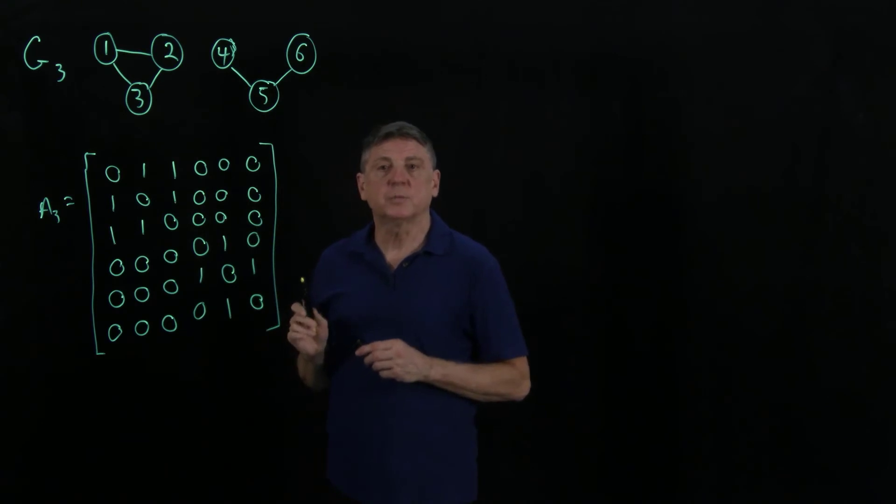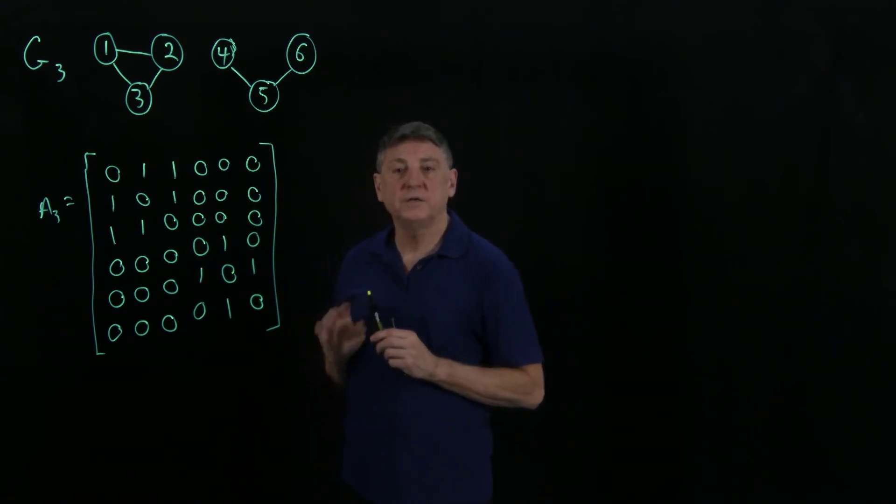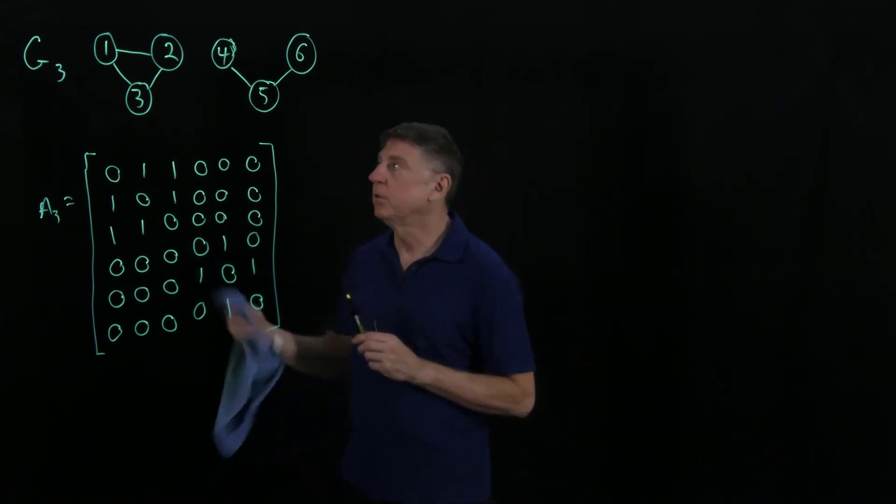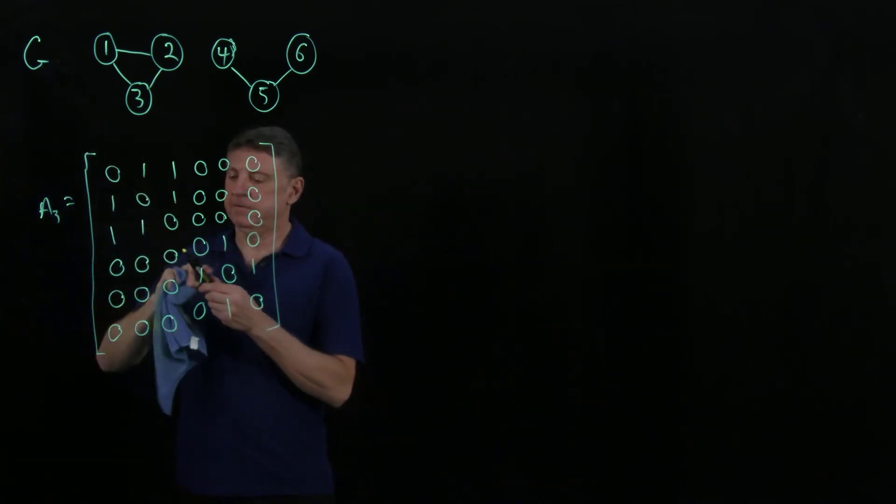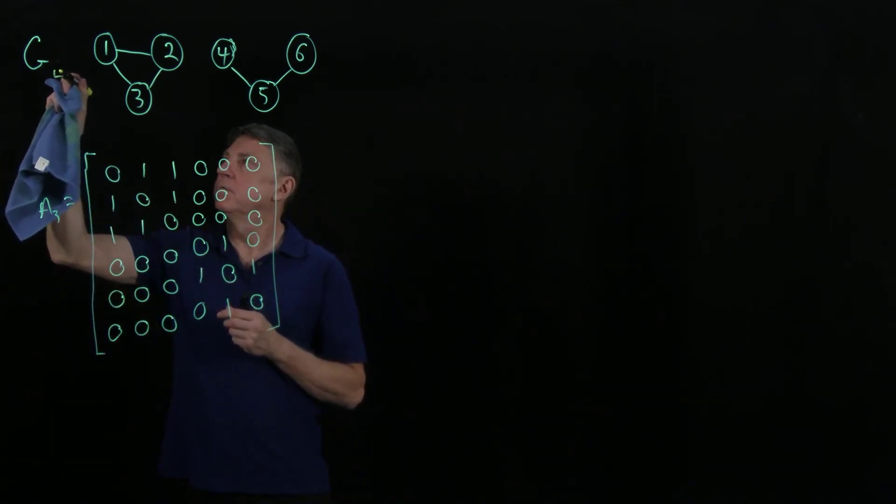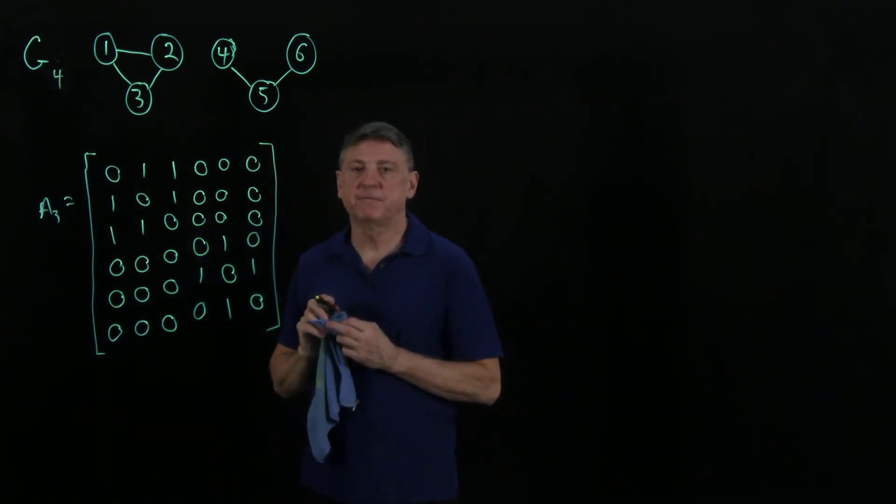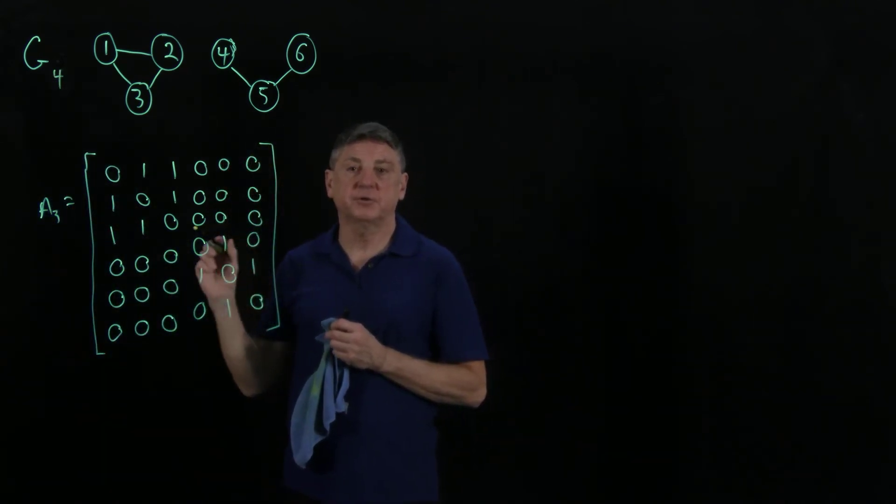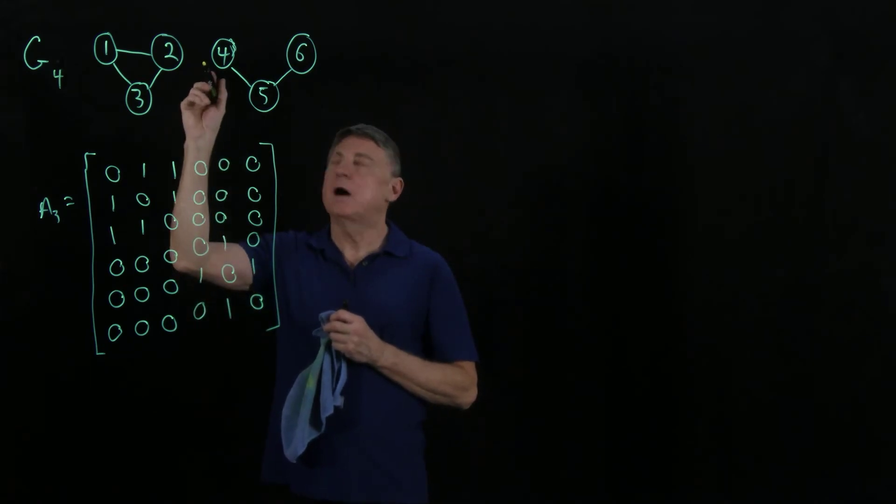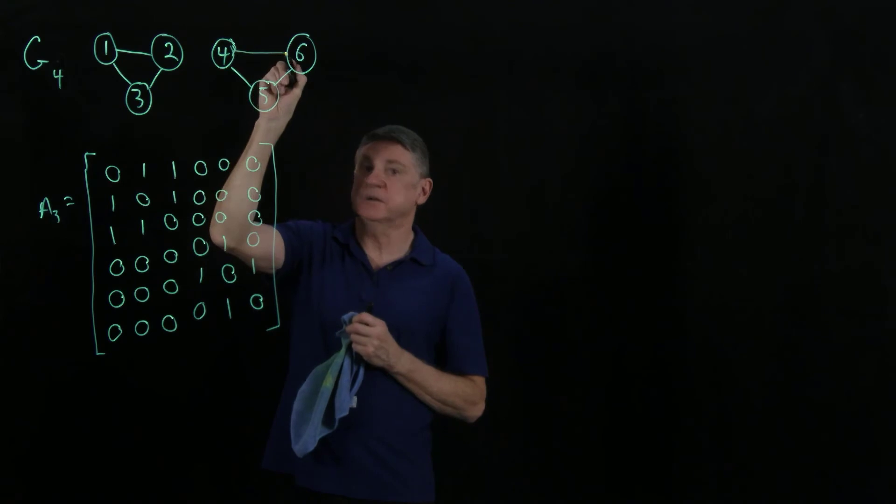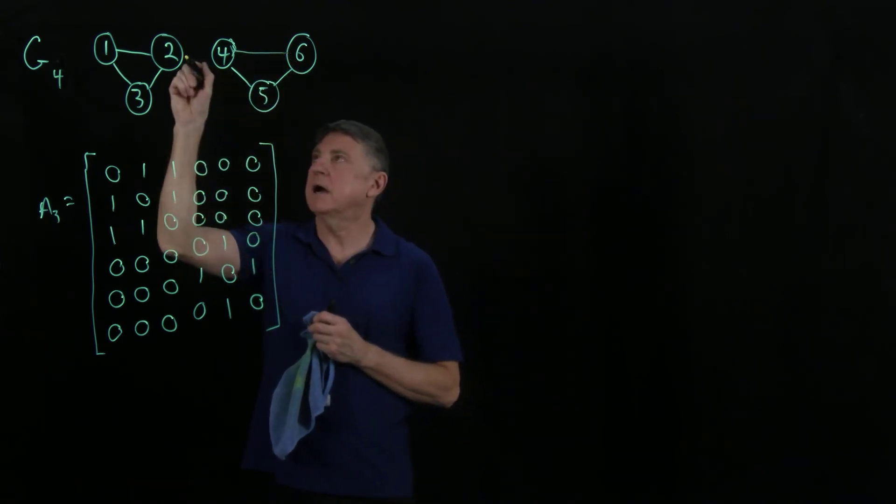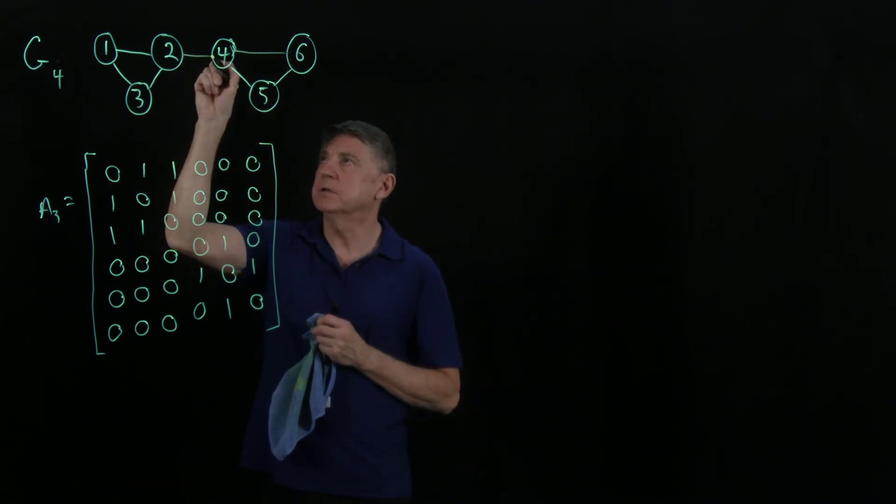Now suppose that I make one small change. Suppose that I now want to look at graph 4, and the difference between graph 4 and graph 3 is now I'm going to do two things. I'm going to make this a cycle, and I'm going to connect these two components.